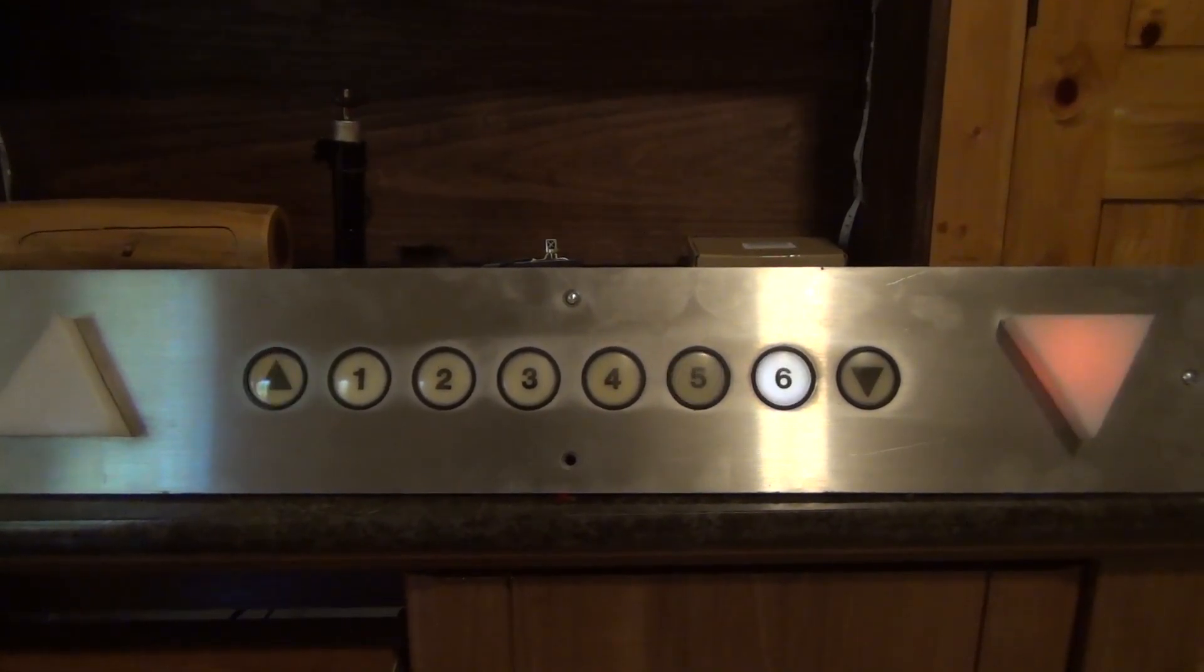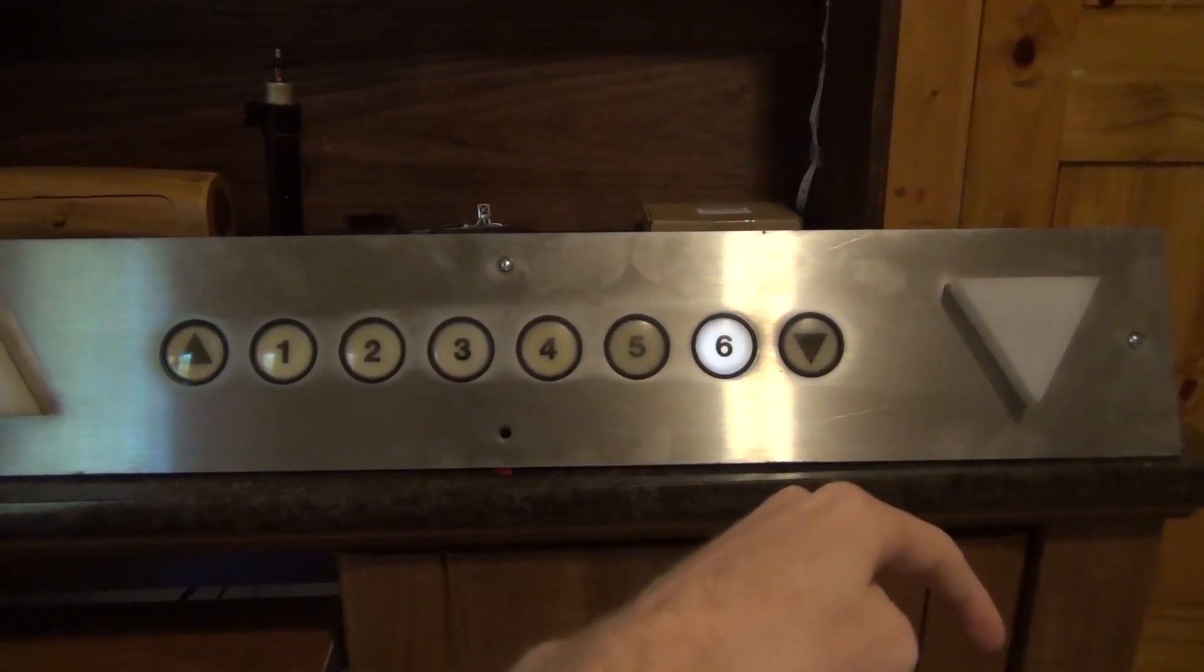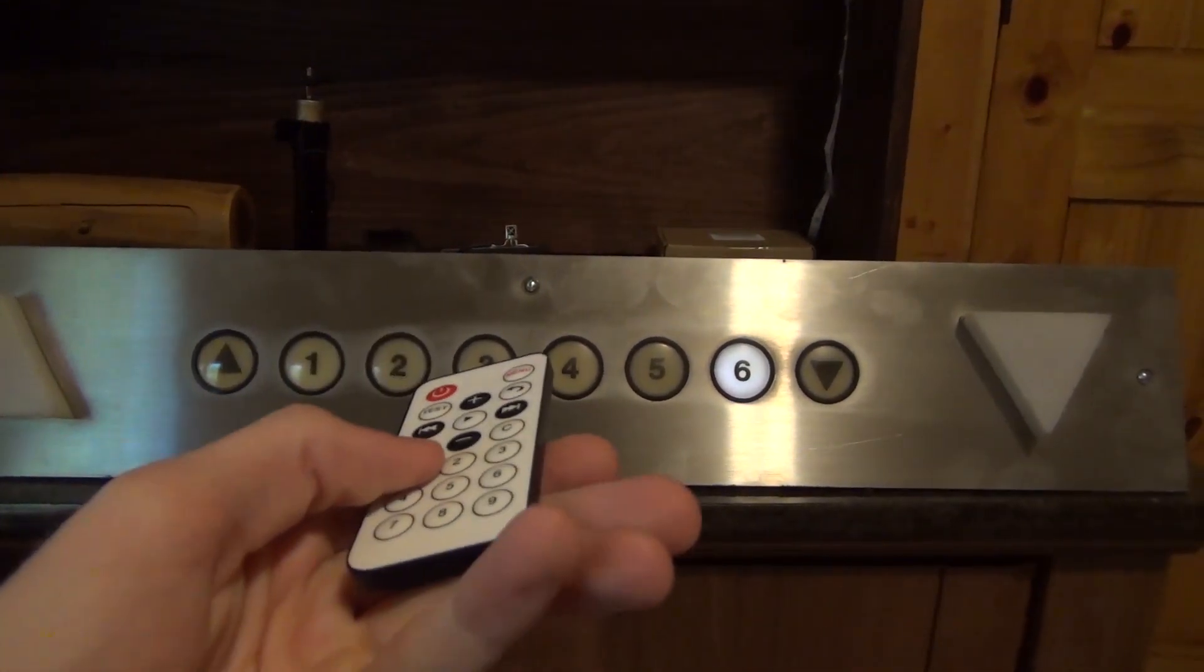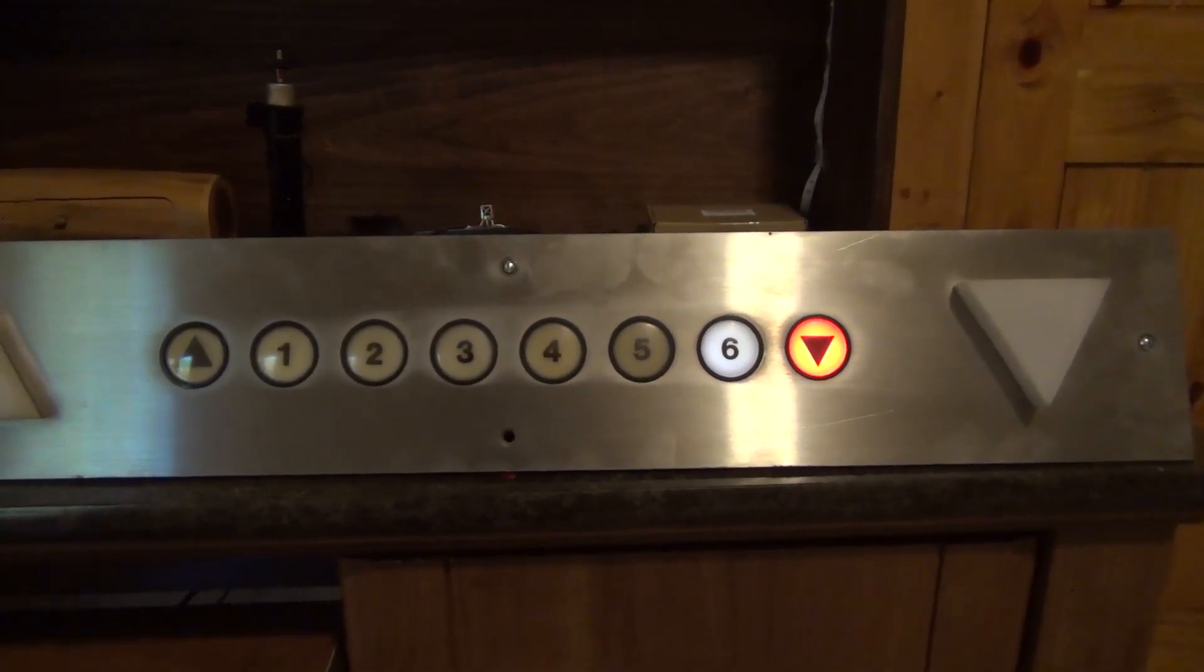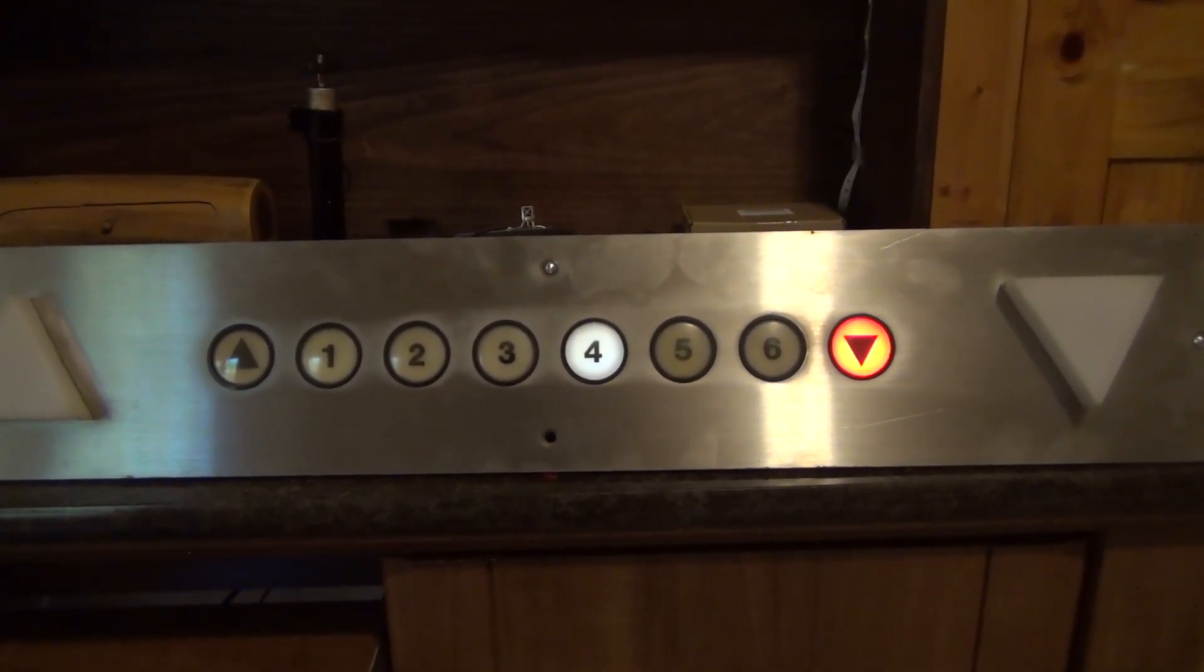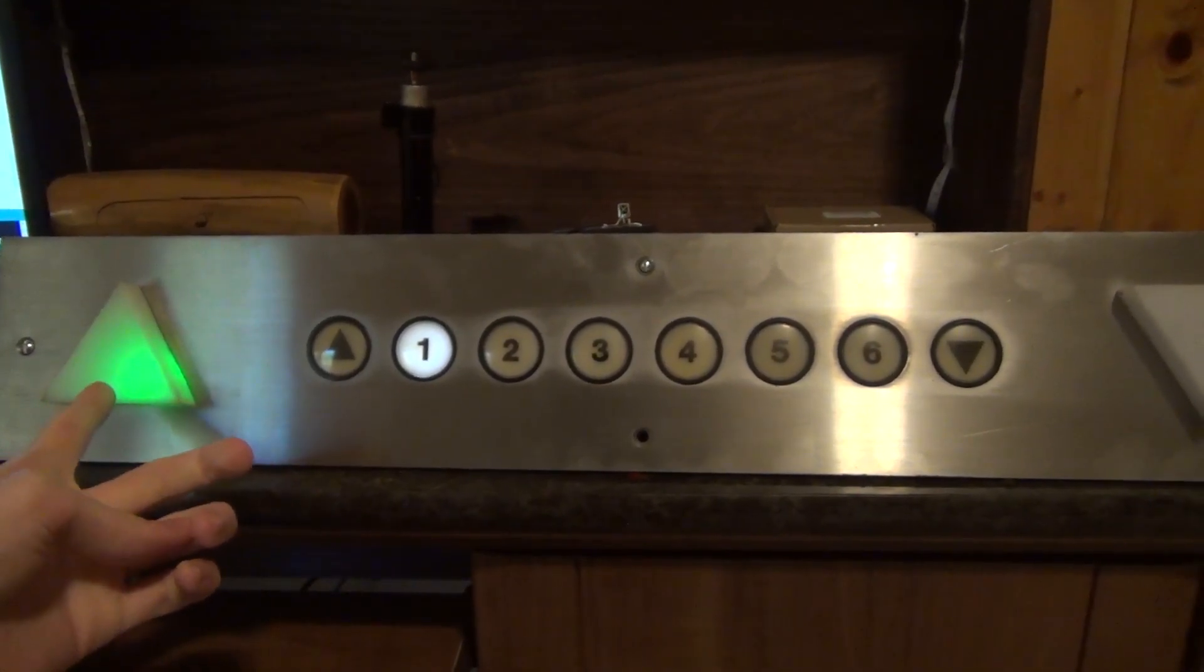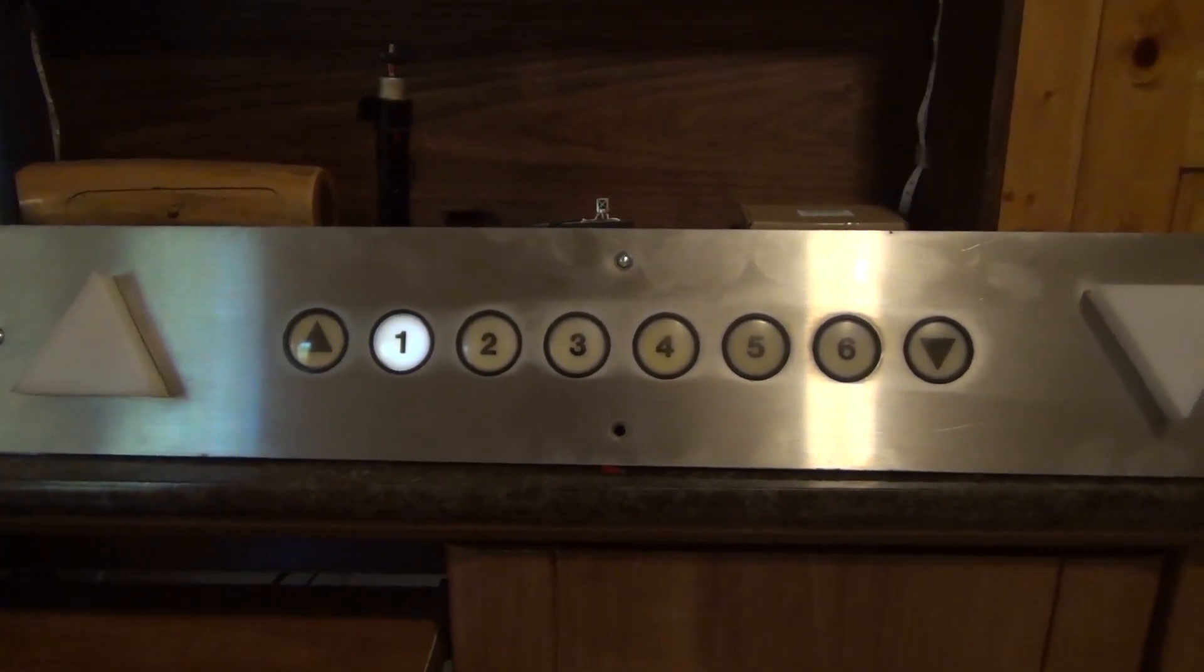In this case, when it reaches floor six, the down arrow is going to go on because we're at the top floor and we need to go down, and we can't go up anymore. Now we're going to send it back to one. Just like before, we're going to have the down arrow go on because we're going down now. In the car, or in this case, the lights are going to move down to the first floor. And likewise, when we get to the first floor, the up arrow comes on because we're at the bottom floor and now we're going back up.